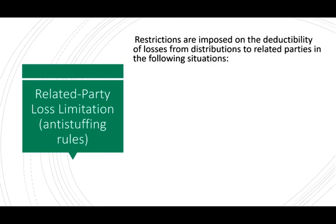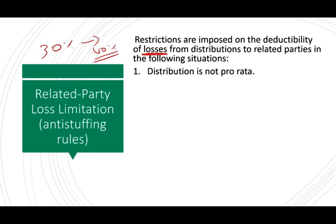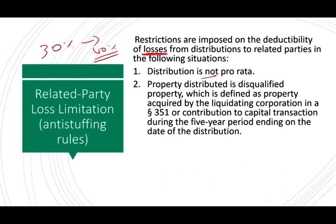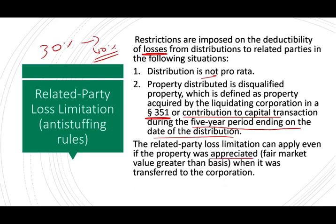Let's look at the related party loss limitation — this is part of the anti-stuffing rules. Restrictions are imposed on the deductibility of losses from distributions to related parties. If you have gains, they're always allowed. The loss limitation applies if the distribution is not pro-rata — meaning you received more than your ownership percentage. Disqualified property is property acquired by the liquidating corporation in a Section 351 transaction or contribution to capital during the five years ending on the date of distribution. The related party loss can even apply if the property was appreciated when transferred to the corporation.